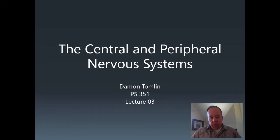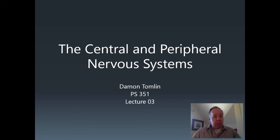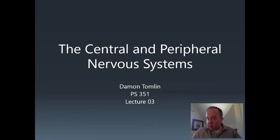Hello everyone, and welcome to our third lecture in our course on brain and behavior. In this lecture, we'll talk about the large-scale structure of the nervous system. We've already talked about neurons—how they're built, what they look like, what their parts are. We'll do basically the same thing but at the larger, visible scale. We're going to talk about the brain, the spinal cord, and the peripheral nervous systems. This lecture is going to be a little bit longer than our usual lectures.